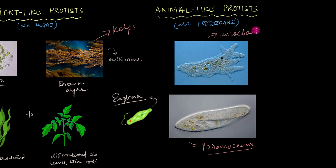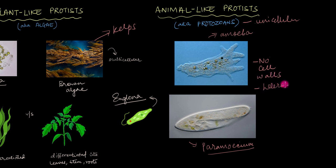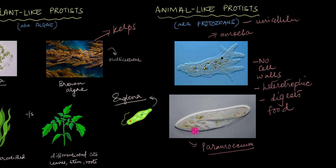These protozoans are exclusively unicellular and they also share certain characteristics with animals. For example, they lack cell walls, they are heterotrophic in nature, and they need to digest their food just like us animals. Now, they don't have fancy digestive systems like we do, but they do have something called a digestive vacuole or a food vacuole.